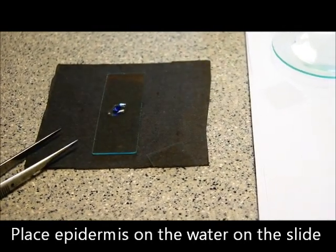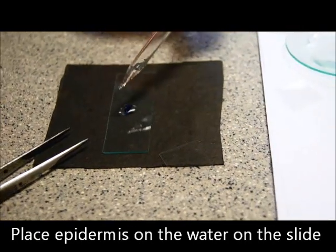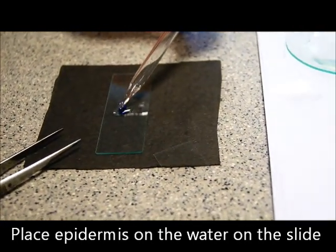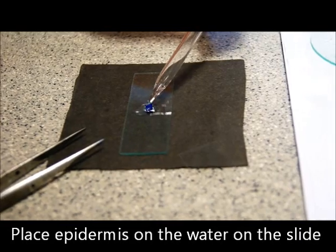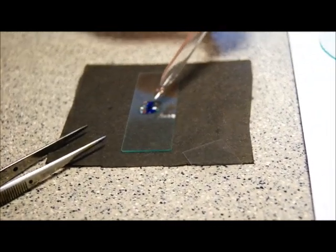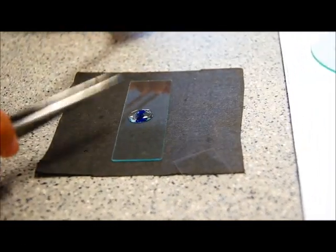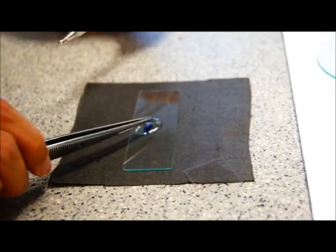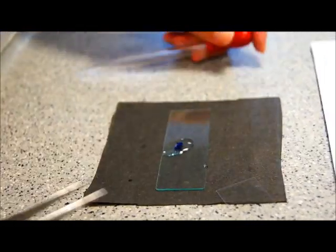You can press it down a little bit to try to submerge the piece of epidermis. If it doesn't get submerged, that's fine. You can add another small drop of water on top of it. And even after this, if it's not submerged, just push it a little bit more. And next, this is the part where you cover the sample with a cover slip.